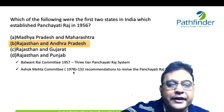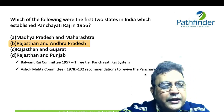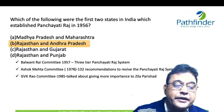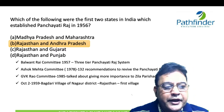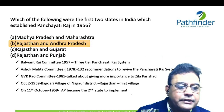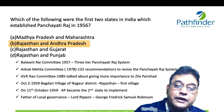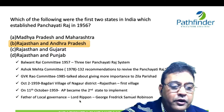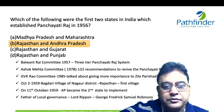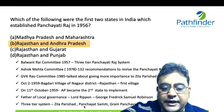The three tiers are: Zila Parishad, Gram Samiti, and Gram Panchayat. The Ashok Mehta Committee in 1978 gave 132 recommendations to revive the Panchayati Raj system. The GVK Rao Committee talked about giving more importance to the Zila Parishad. On October 2, 1959, Bagdari village of Nagaur district in Rajasthan became the first village to have a Gram Panchayat, and on October 11, 1959, Andhra Pradesh became the second state to implement Panchayati Raj. Lord Ripon is called the father of local governance in India.